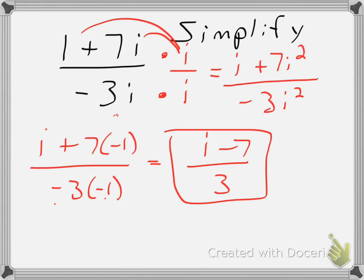And as I said, you could split this into i over 3 minus 7 over 3, if you want it in complex form, in what some would say true complex form. Again, my i is removed from the denominator, so I have rationalized it and divided it as far as I want to go.